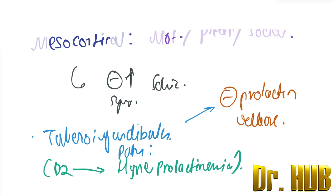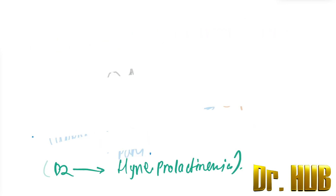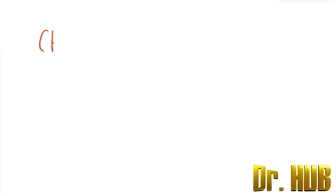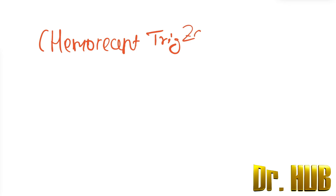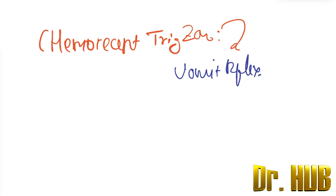Then we move on to the chemoreceptor trigger zone. The chemoreceptor trigger zone is associated with the vomiting reflex. The action of the drug blocking the D2 receptors here is antiemetic.